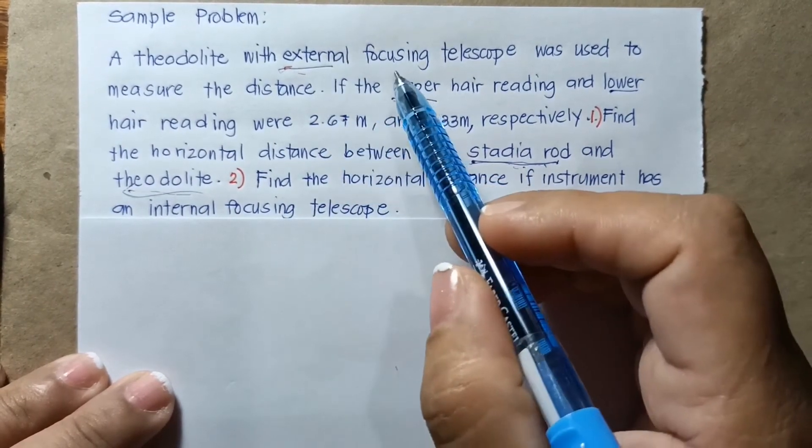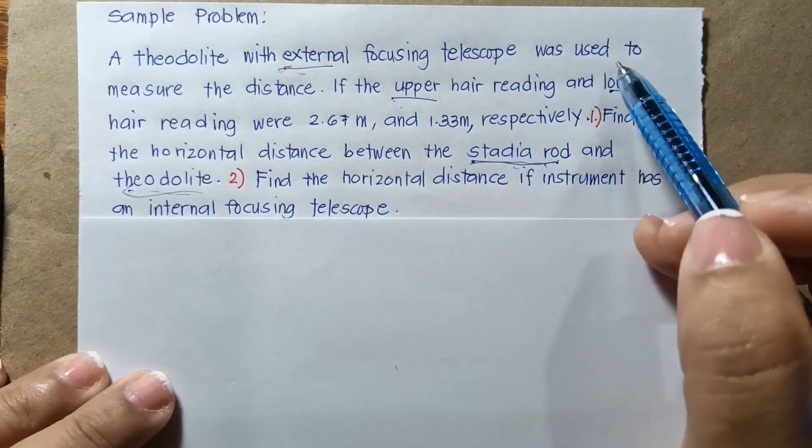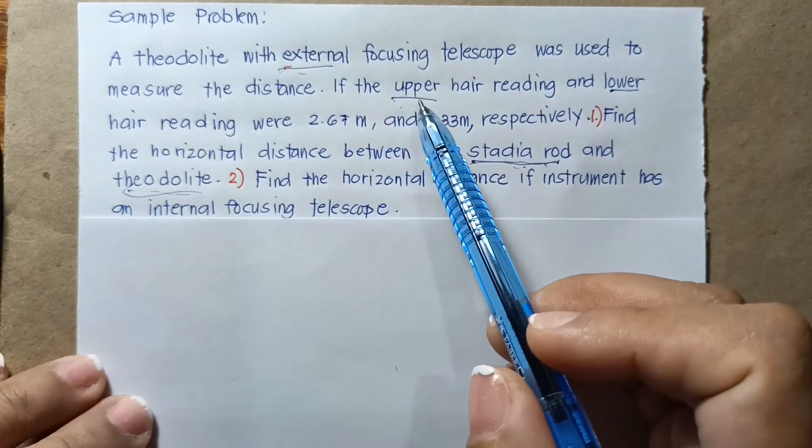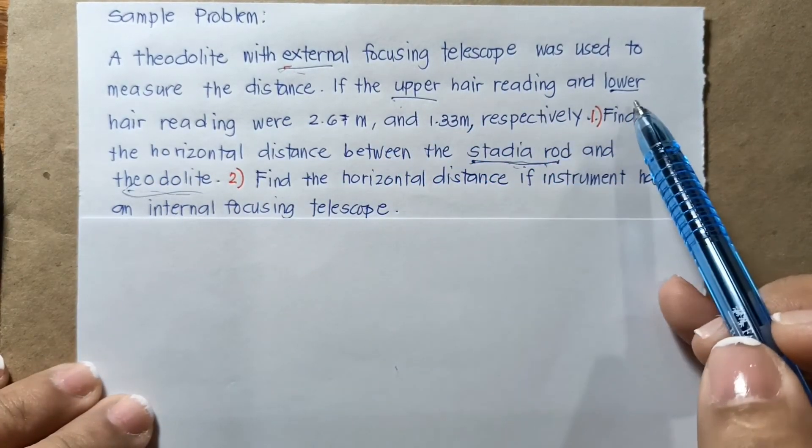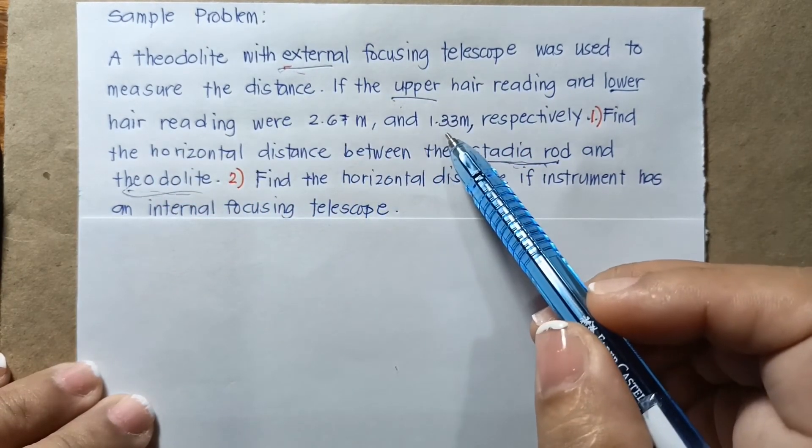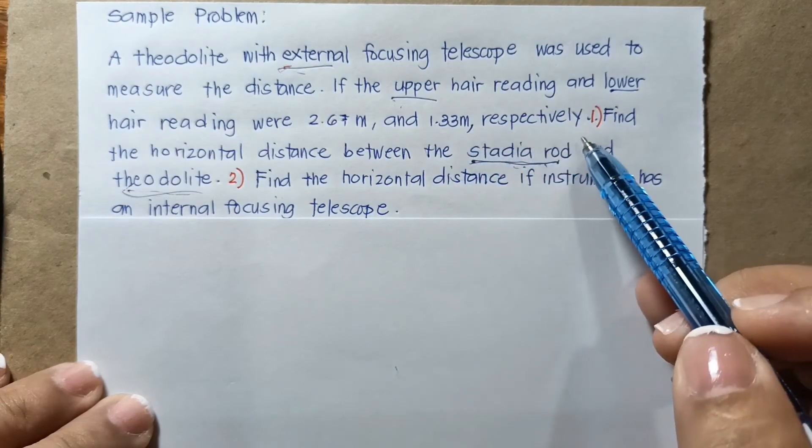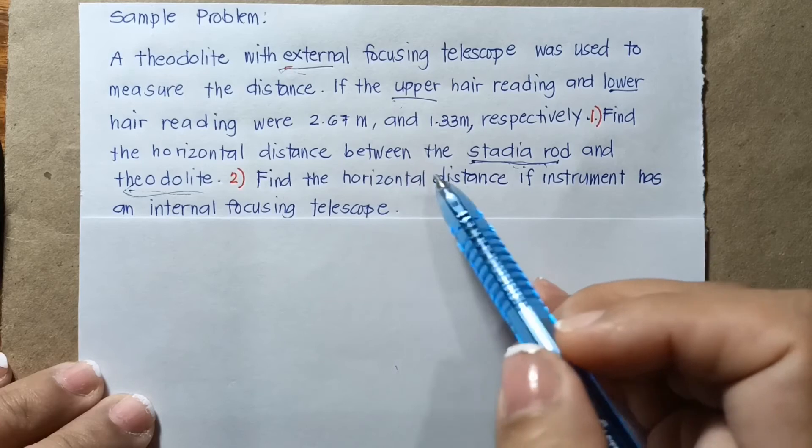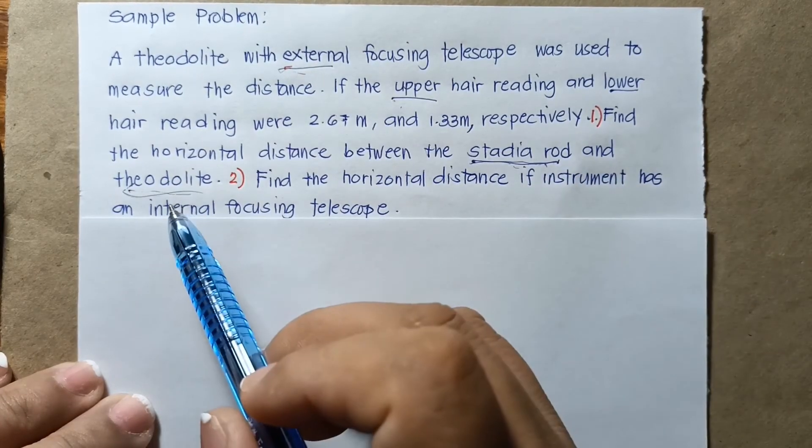A theodolite with external focusing telescope was used to measure the distance. If the upper hair reading and lower hair reading were 2.67 meters and 1.33 meters respectively, find the horizontal distance between the stadia rod and the theodolite.